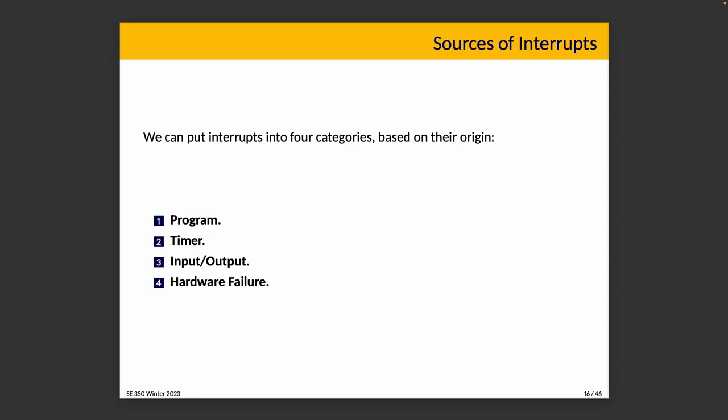Interrupts are categorized into four buckets. Program interrupts: something happens in the program — division by zero — resulting in an interrupt handled like an exception. Timer interrupts: a configured timer within the processor expires; for example, every second the timer fires and says please update the clock. IO interrupts: an IO controller signals successful or unsuccessful completion of an operation — if we did a read from disk and were waiting, that results in an interrupt saying it's ready. Hardware failure: something happens in hardware, like the power going out.